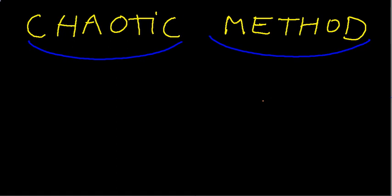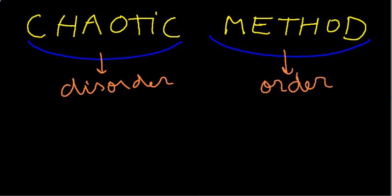These two words are an oxymoron because chaotic means something like disorder, something like confusion, and method means something like order. It's the opposite, it means you have something with a structure.